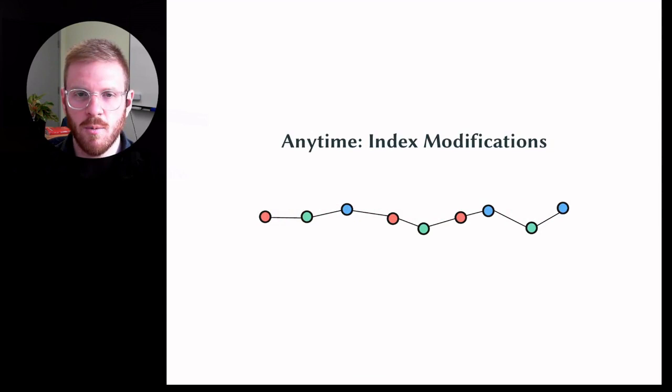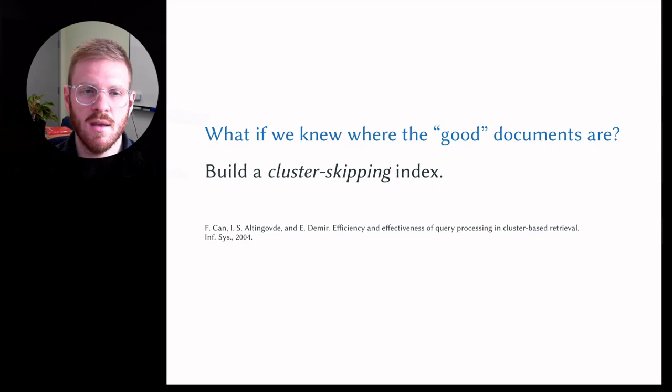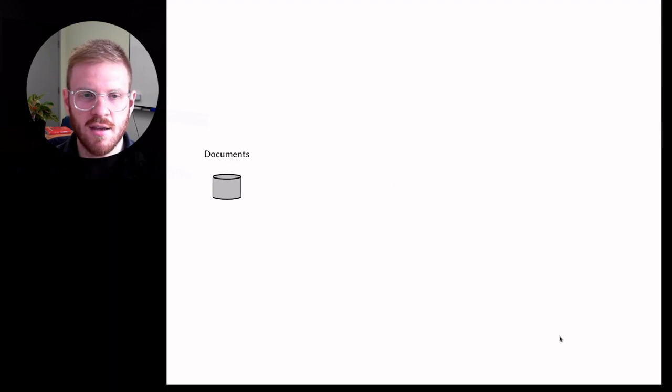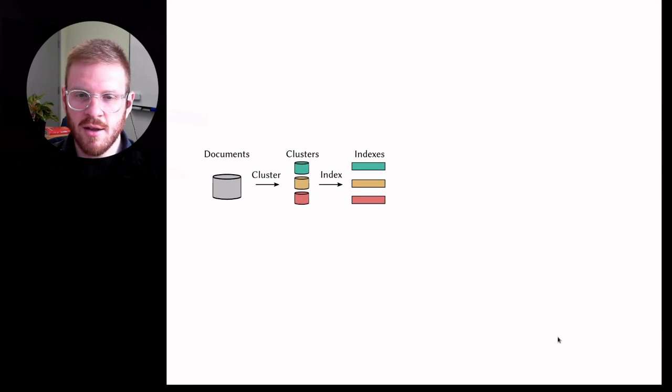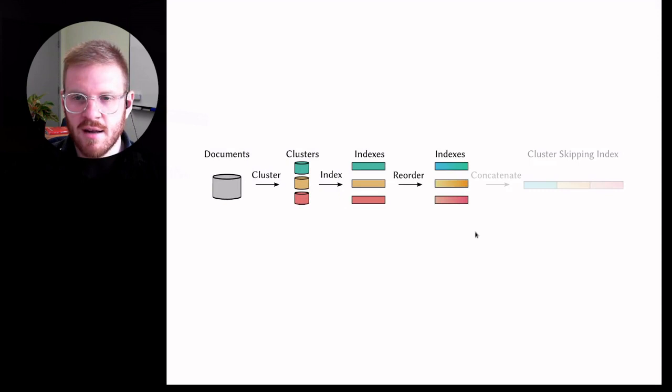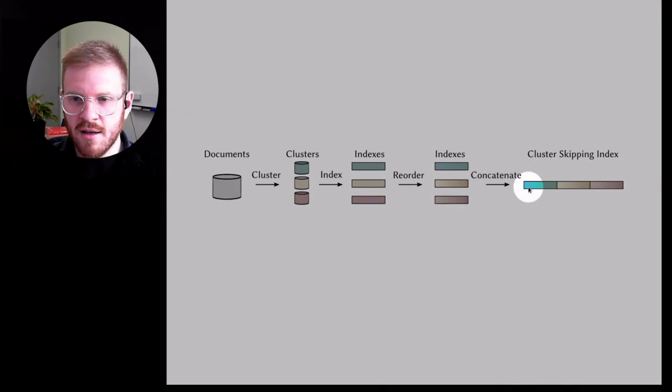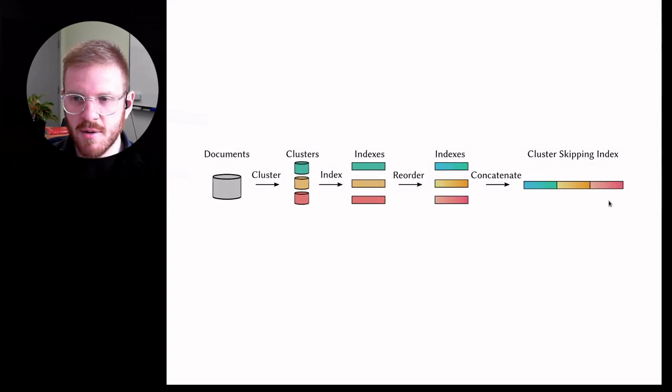In this work, we try to bring in any time retrieval into this type of document ordered index. What we do is we modify the index. The question is, what if we knew where the good documents were? The idea here is to build a cluster skipping index. You take your document corpus, you cluster the documents, you build a little index for each of those clusters, and that clustering is done by topicality. You can do some reordering to optimize the space consumption. Then you essentially glue those back together. What that gives you is a cluster skipping index where you know where each slice of documents are.